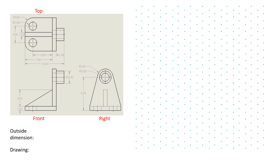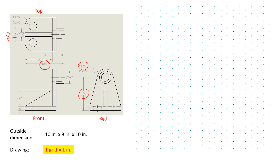I have the isometric view grid paper on the right-hand side. Make sure you're using the paper in the orientation that has a vertical line. We're going to correspond one grid to one inch. The dimensions of this part are given in the orthographic views. The outer dimension shows a width of 10, a height of 8 plus 2, so together that's 10, and then a depth of 4 plus 2 plus 2, so that's 8. This is an awkward set of orthographic views — so 10 by 10 by 8.